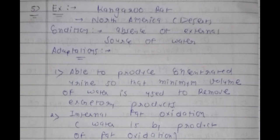Two adaptations are there for kangaroo rat. First, it is able to produce concentrated urine. If concentration of urine is higher, water content will be lower. They are able to excrete much concentrated urine, so minimum volume of water will be lost. Second, internal fat oxidation is found. In oxidation, catabolism will occur — large molecules break down into small molecules — and fat oxidation produces energy.